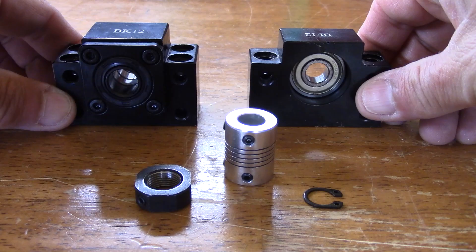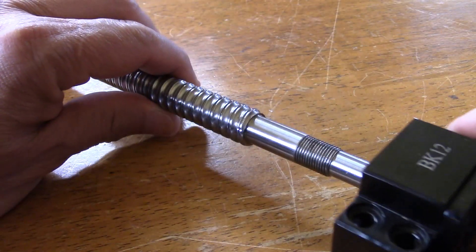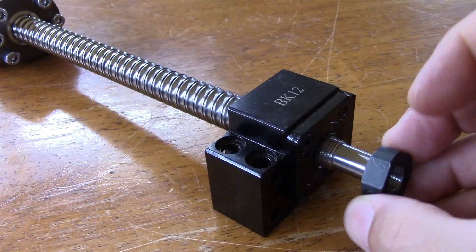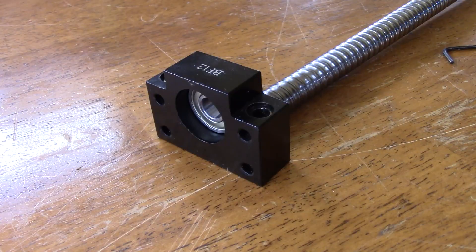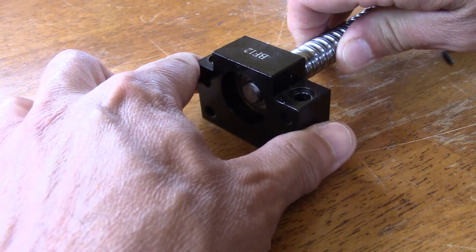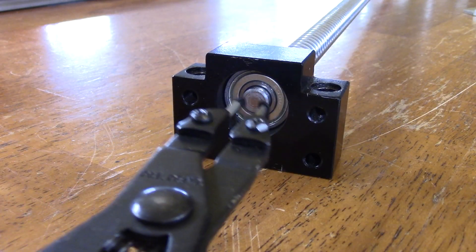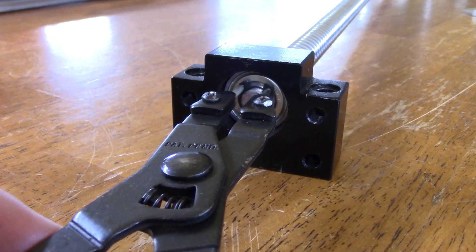We can now fully assemble the bolt screw by adding the two pillow blocks. The order is not important, so I will add the BK12 and then the locking nut. Finally, we will position the BF12 bearing block and lock it in place with a retaining ring clip.